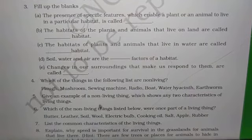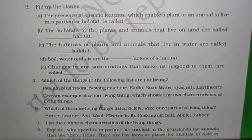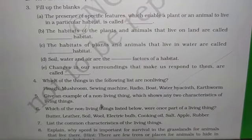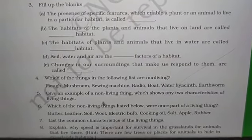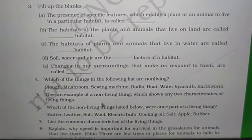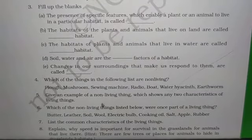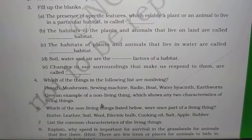List the common characteristics of living things — we have already discussed these. You can write directly from the explanation. Explain why speed is important for survival in grasslands for animals that live there. There are very few trees in grassland habitats, so animals cannot hide. Therefore, speed is very important for the survival of organisms in grasslands, especially prey animals.